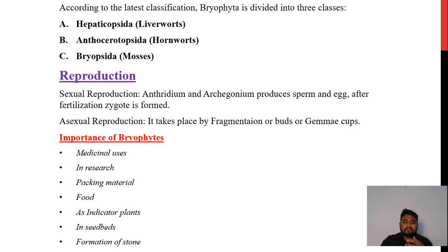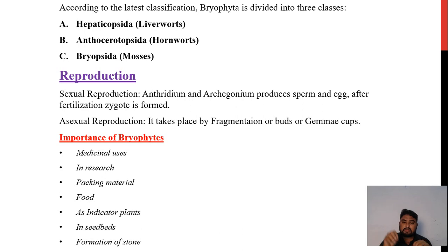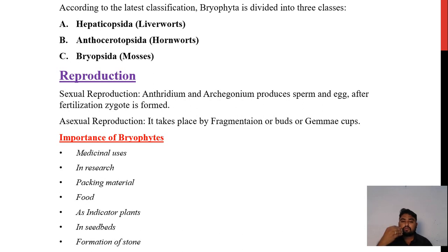Asexual reproduction takes place by fragmentation, budding or gemma cups. Fragmentation is the breaking of algae or bryophytes into small pieces. These small pieces grow into the full form of a new plant.